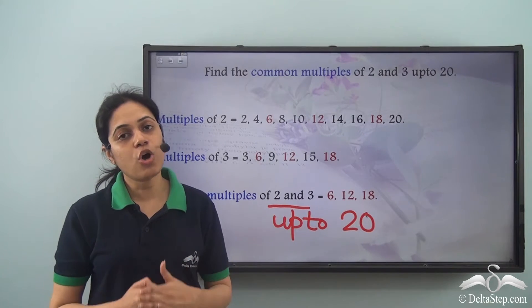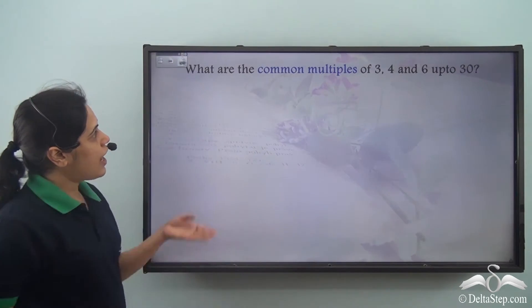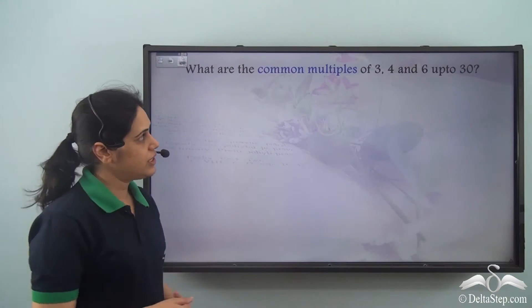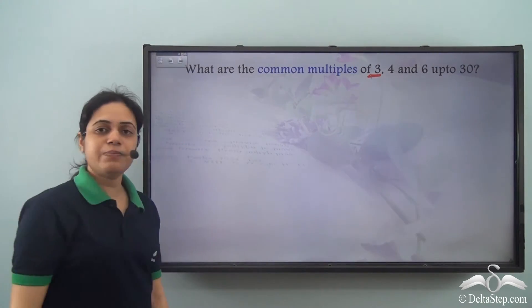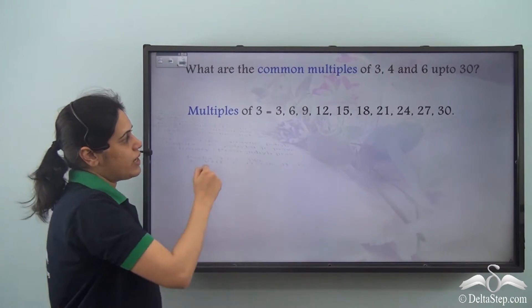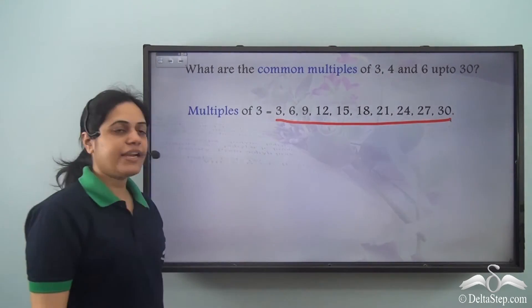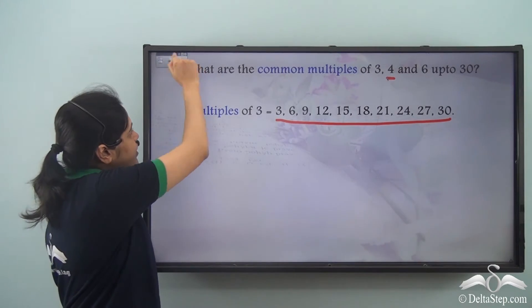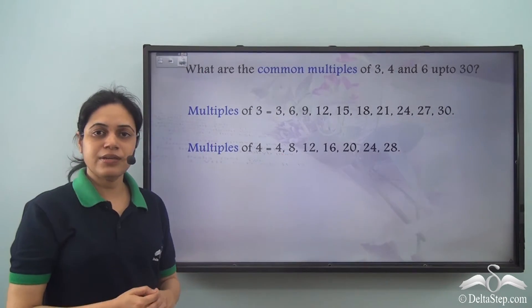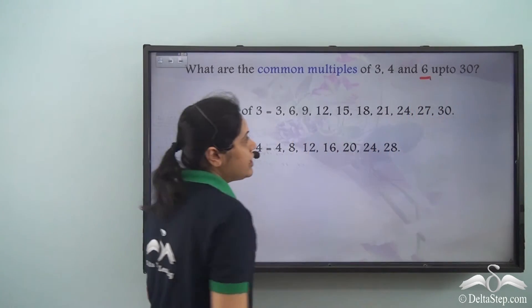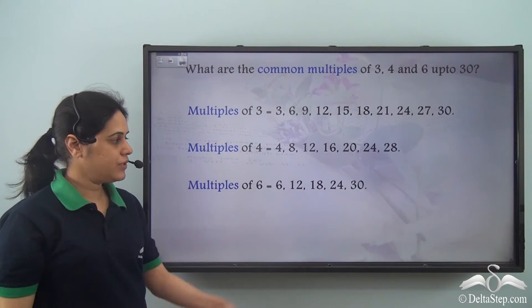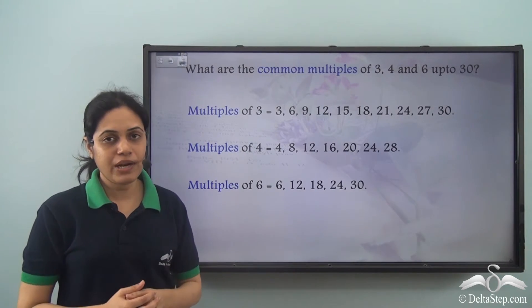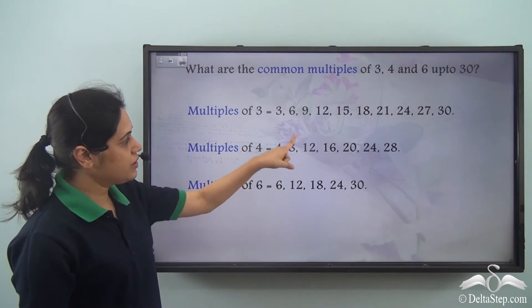So this is how you can find the common multiples. Now let us find the common multiples of 3, 4 and 6 up to 30. First I need to find the multiples of 3 up to 30, then the multiples of 4 up to 30, and lastly all the multiples of 6 up to 30. Now I compare the three lists to see what are the common numbers — that is, the numbers present in all three lists.